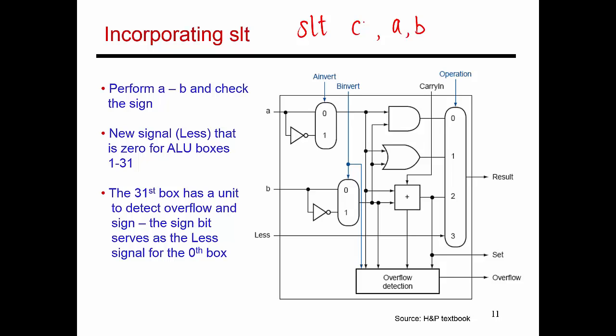So in order to perform this, I need to basically do an A minus B subtraction, and if that result is negative, then C gets set to 1, else C gets set to 0.